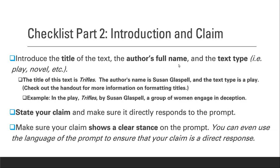The author's full name — you need to make sure to spell the author's full name correctly always. You'll use the author's full name the first time you introduce the piece of writing, and then if you refer to the author after that in your paragraph, just refer to them by their last name, Glassbell. The text type is whether it's a play or a novel or a poem or a short story. In this case, Trifles is a play — it's a short play, but it's a full play.